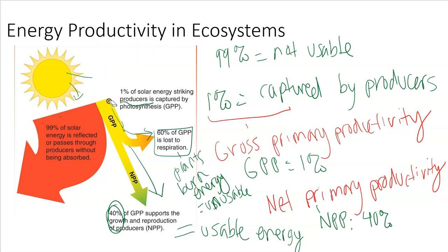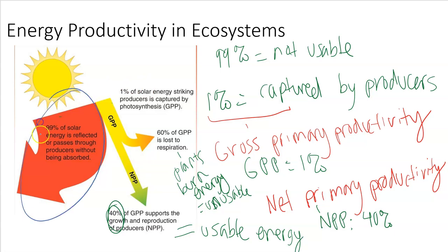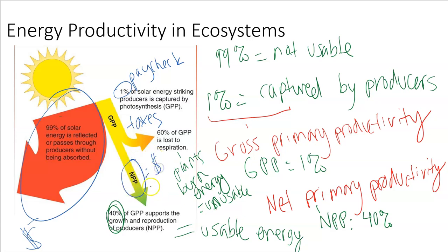A really good way to remember this: pretend you work at Burlington Coat Factory. This picture represents all the money that Burlington makes. 99% of the money Burlington makes will go into things like advertising, marketing, buying more clothing, and opening new stores. This 1% right here is actually your paycheck — that's the gross primary productivity for yourself. But there are lovely things like taxes that waste some of your money, so the NPP is what you actually take home. The money you put in your pocket is your net primary productivity, because your paycheck says one thing but the actual amount in your bank is another.